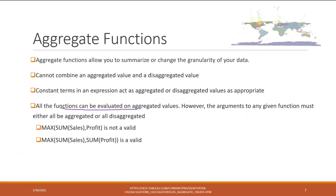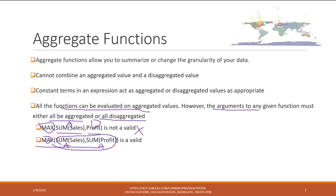All functions can be evaluated to aggregated values; however, the arguments must be either all aggregated or all disaggregated. For example, using a MAX function to compare SUM(sales) and profit is not valid, because SUM(sales) is aggregated while profit is disaggregated. Instead, we can use MAX with SUM(sales) and SUM(profit) — both arguments are aggregated, so that is valid.